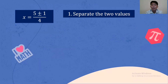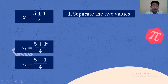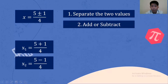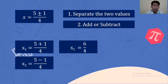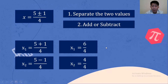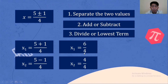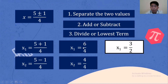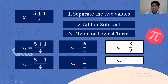The next step is to separate the two values: 5 plus 1 over 4, and 5 minus 1 over 4. Adding and subtracting: 5 plus 1 is 6 over 4, and 5 minus 1 is 4 over 4. Then divide to get the lowest term. 6 over 4 simplifies to 3 over 2. 4 over 4 equals 1. So the values of X are 3 over 2 and 1.